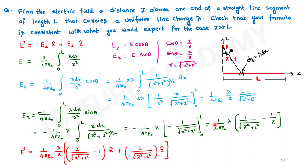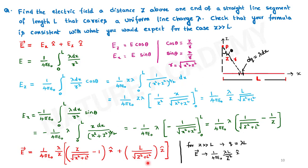Unlike the midpoint case, the x-component does not cancel here because there is no symmetry — the line segment is entirely on one side. So E-bar equals 1 over 4π epsilon-naught times lambda over z times [z over the square root of z-squared plus L-squared minus 1] x-cap plus [L over the square root of z-squared plus L-squared] z-cap. When z >> L, the total charge is lambda times L, and E-bar becomes 1 over 4π epsilon-naught times lambda L over z-squared times z-cap.